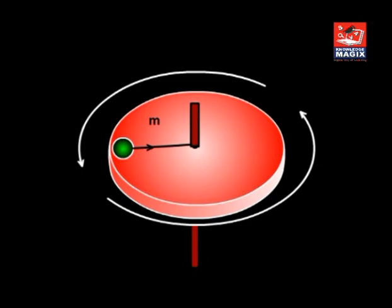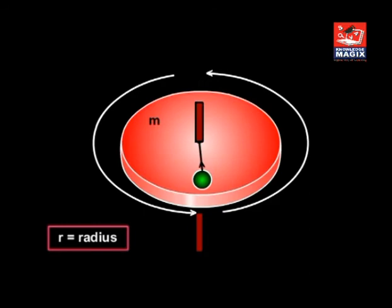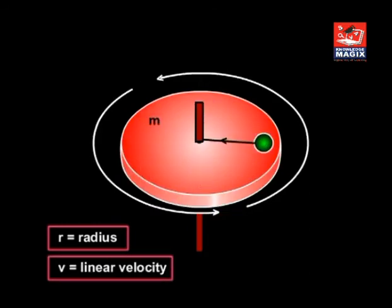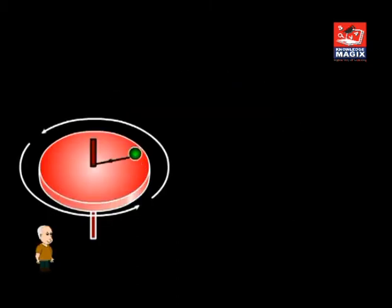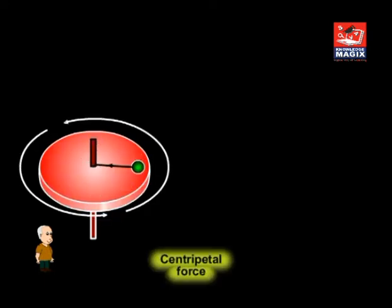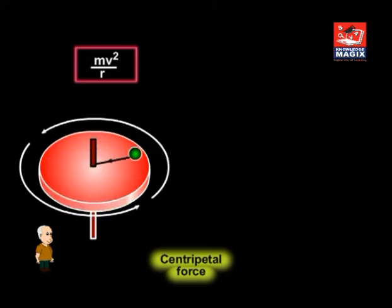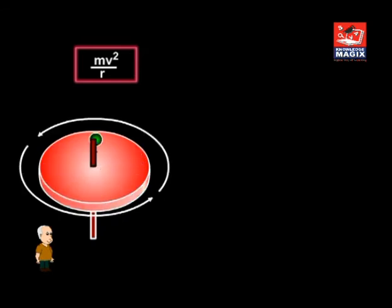For example, let a body of mass M be placed on a smooth circular table rotating with uniform angular velocity. Let R be the distance of the body from the axis of rotation and V its linear velocity. If the frictional force is insufficient, the body must be tied to the center by a string. A person standing outside the rotating table will observe the body rotating and will see a centripetal force Mv²/R acting on the body — provided by the tension in the string, which is a real force.